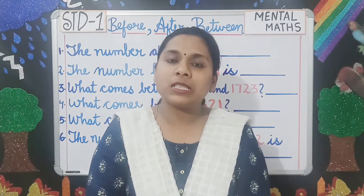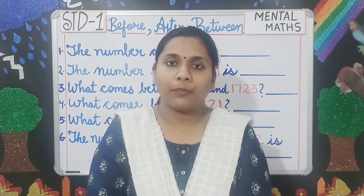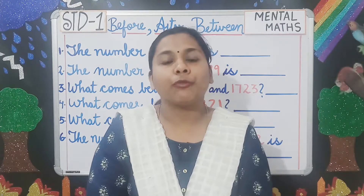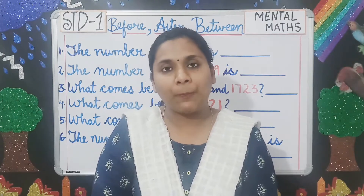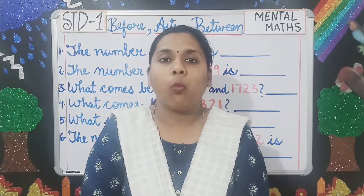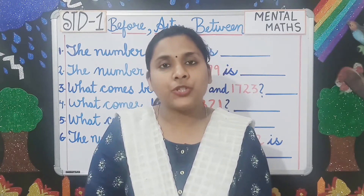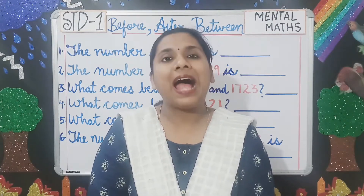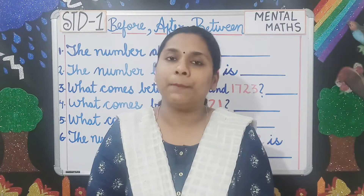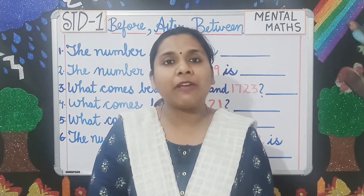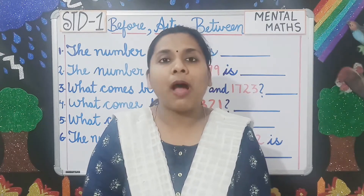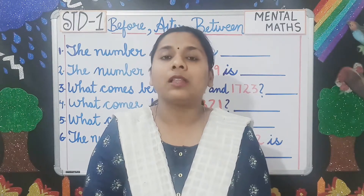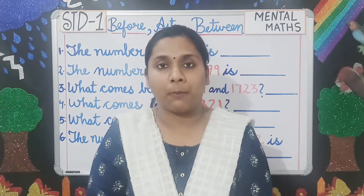After means forward counting. You have to move one step forward. For example, 1 to 10: 1, 2, 3, 4 and so on. And between means in the middle — if two numbers are there, you have to write the middle number. That is the number between the two numbers.